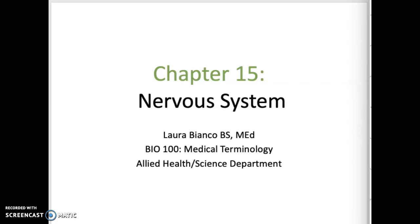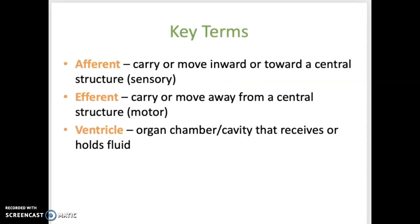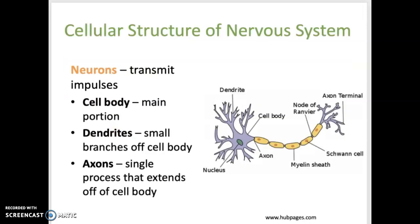Chapter 15 covers information regarding the body's nervous system. Here are some key terms: afferent means to carry toward a central structure, efferent means to carry away from a central structure, and ventricle refers to a chamber or cavity that receives or holds fluid.